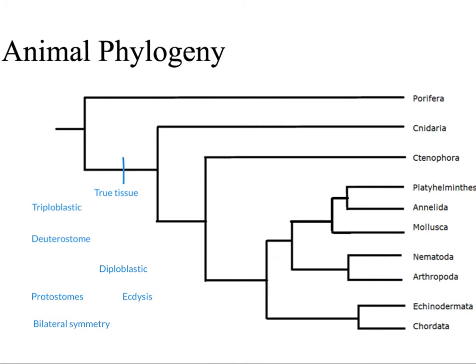Our next major innovation has to do with the number of tissue layers. Cnidaria are the jellies, corals, and sea anemones — they are diploblastic. All of our other organisms are actually triploblastic.